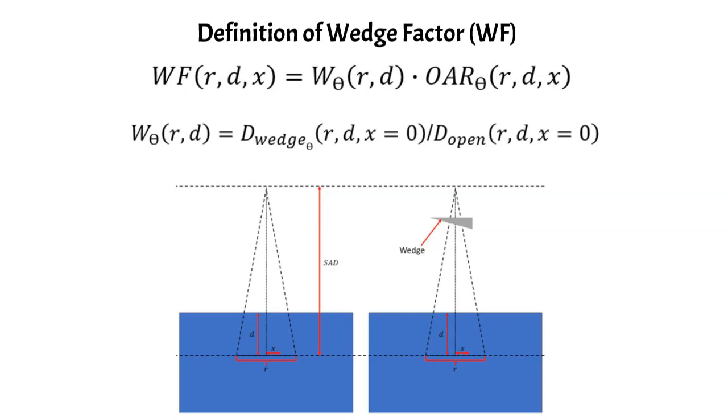The diagram also illustrates the directional dependence of the off-axis ratio. If you went left, there would physically be less wedge there, so your dose would be higher. But if you went right, there's more material in the wedge, so you would be attenuating more and the dose would be lower.